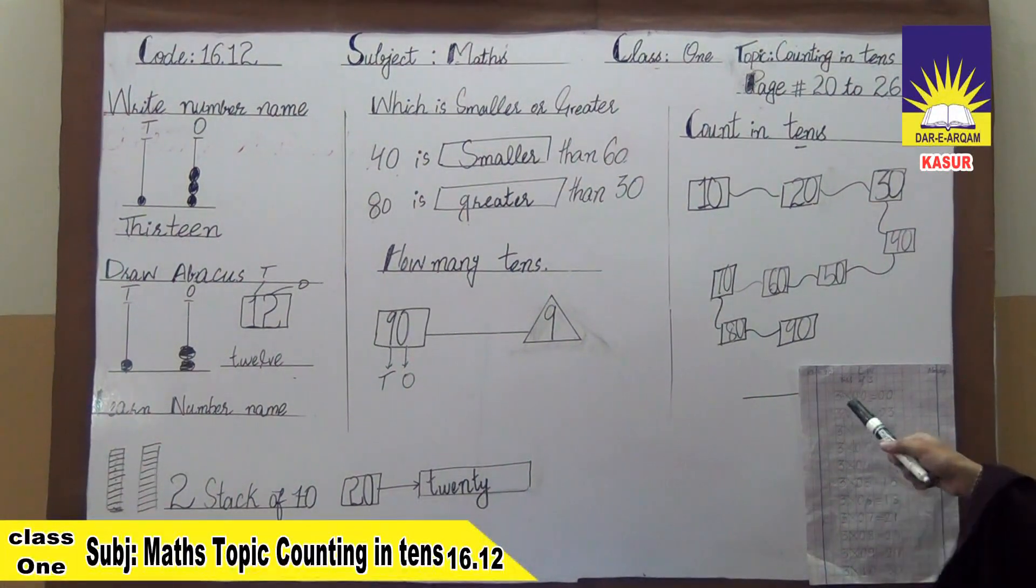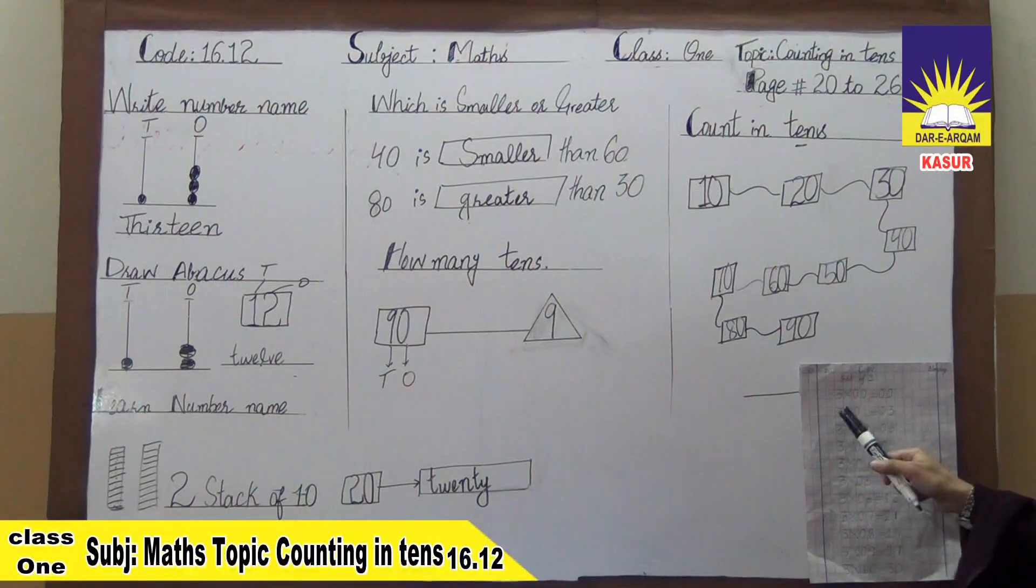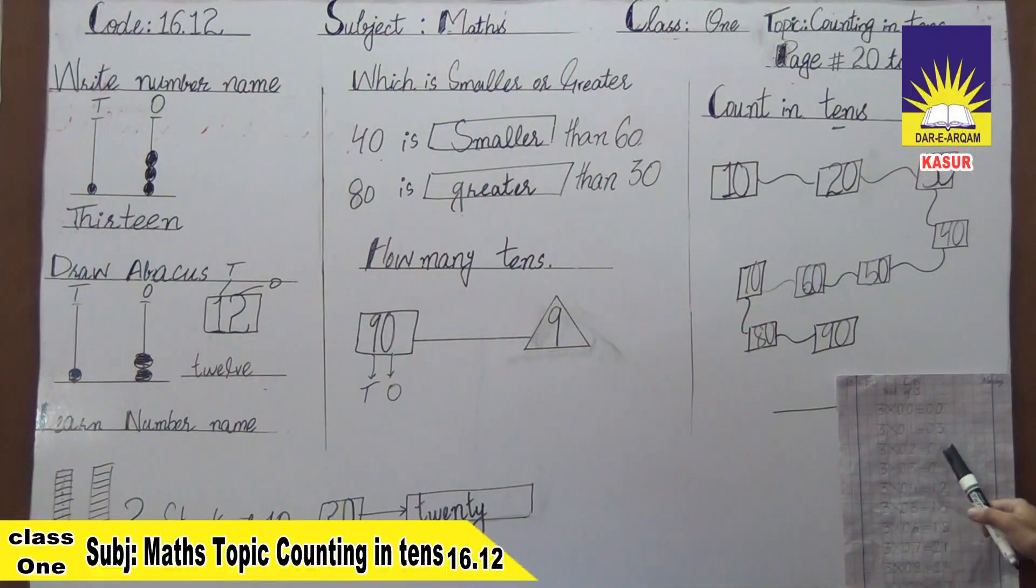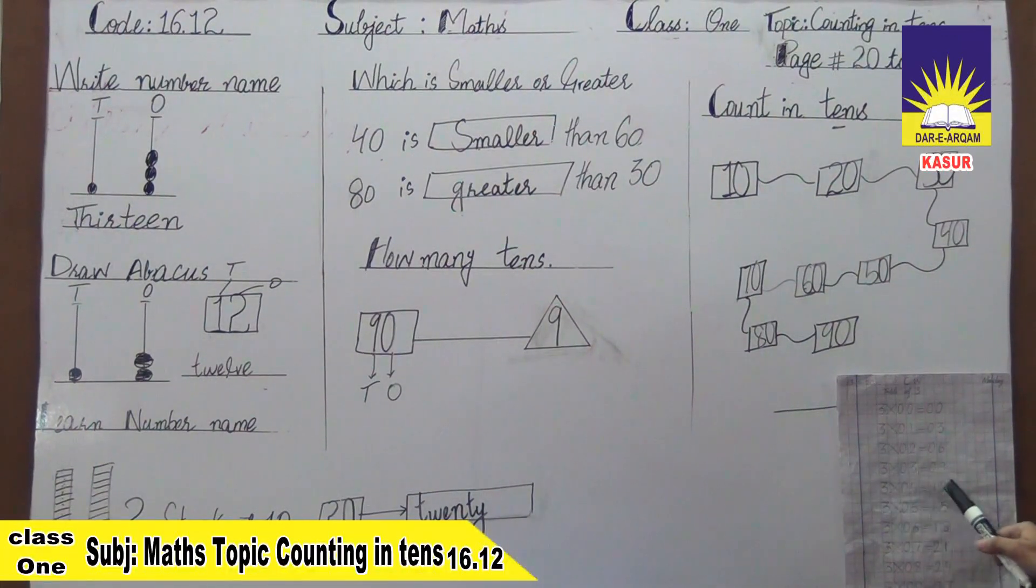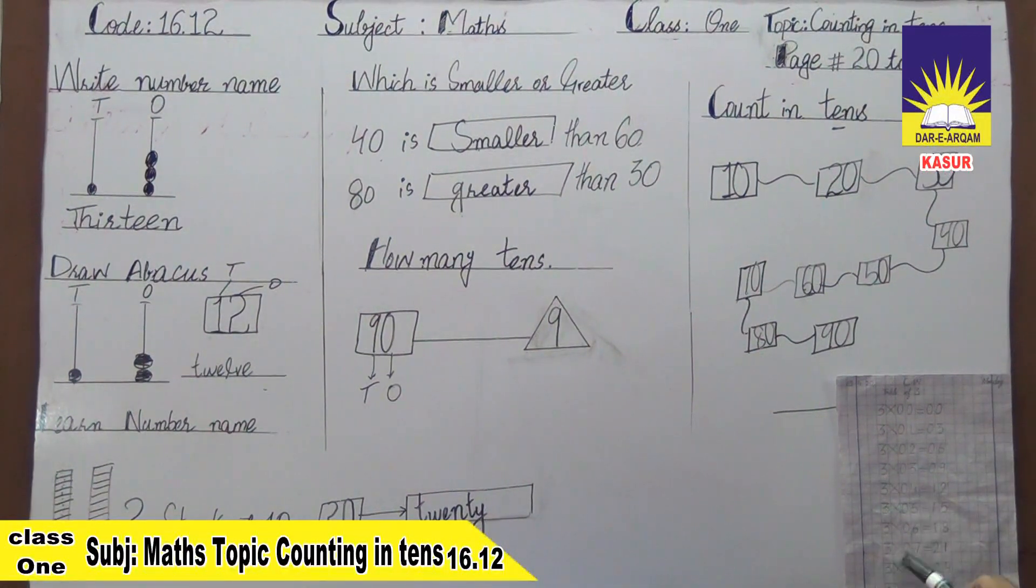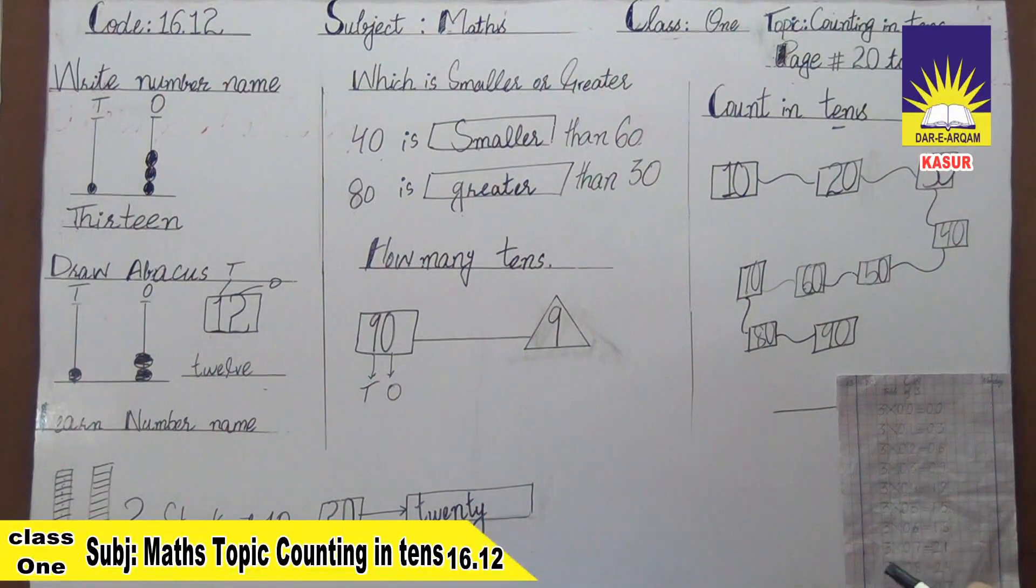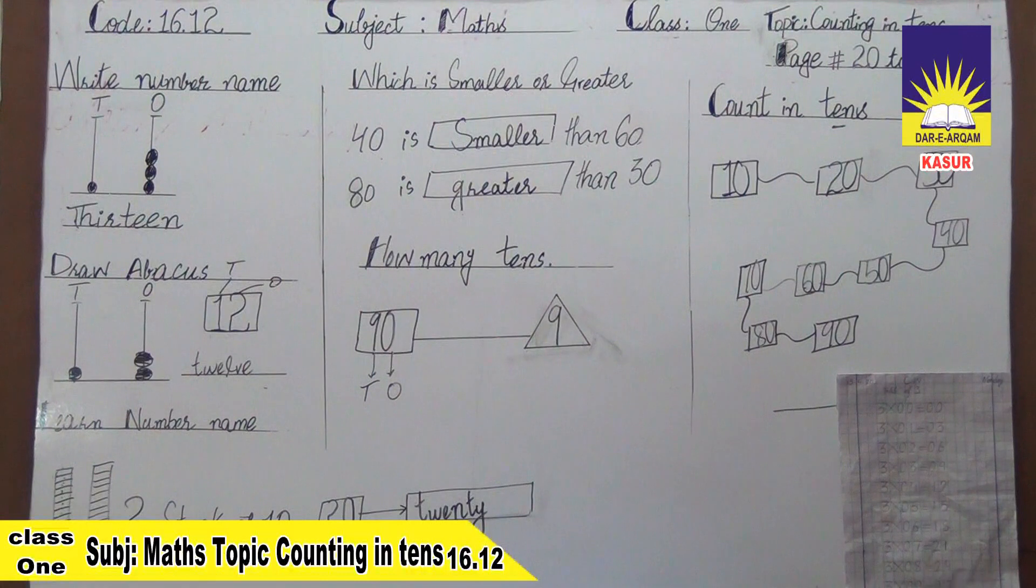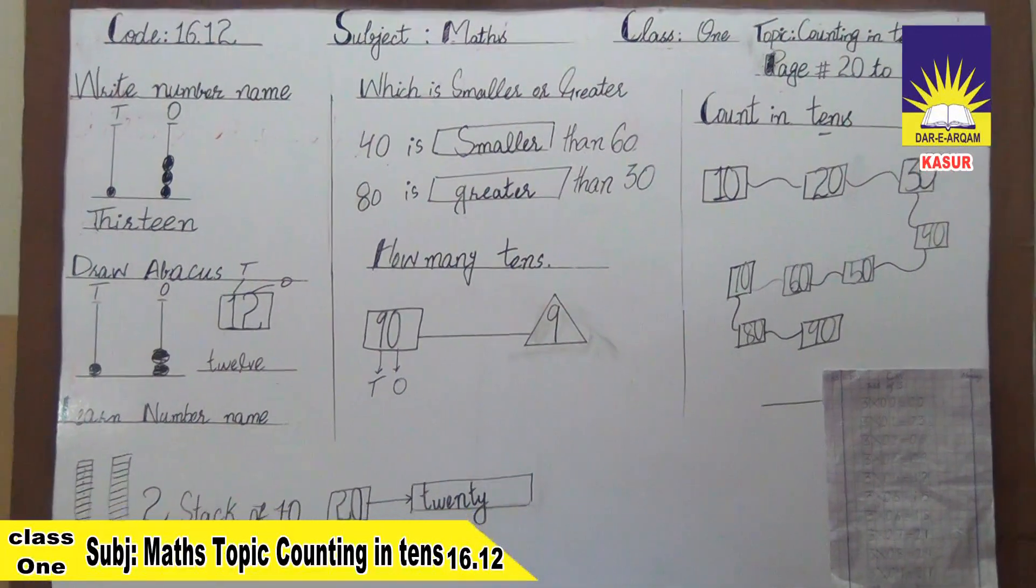3 into 0 equals 0, 3 into 1 equals 3, 3 into 2 equals 6, 3 into 3 equals 9, 3 into 4 equals 12, 3 into 5 equals 15, 3 into 6 equals 18, 3 into 7 equals 21, 3 into 8 equals 24, 3 into 9 equals 27, 3 into 10 equals 30.